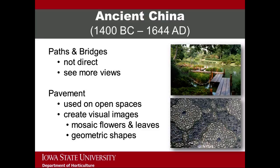Chinese gardens include paths and bridges to enable a person to move throughout the garden. These paths and bridges are often winding and are not the shortest distance between two points. This allows the garden visitor to see more views within the garden and experience it more fully. Chinese gardens are characterized by having extensive paving patterns throughout. They do not have turf grass in the open spaces within the garden. The intricate paving patterns are used to create visual images such as mosaic flowers and leaves or geometric shapes. The top image on this slide shows a zigzag bridge commonly found in Chinese gardens. The bottom image is a paving pattern of two different flower shapes.